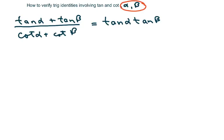So we want the left side to look like the right side. The right side is written in terms of tan, but we have cotan here.